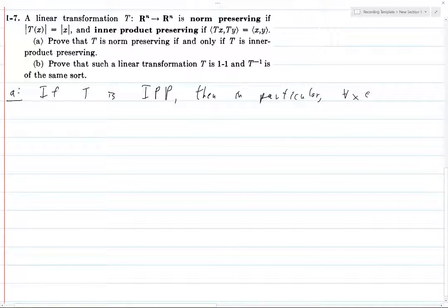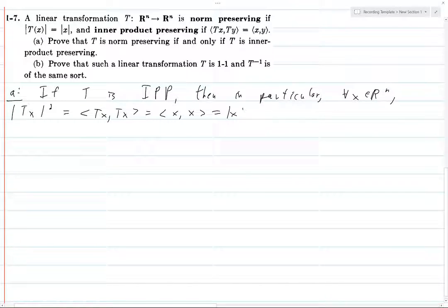for all x in R^n, what do we have? We have |Tx|^2, well we know that this is equal to the inner product of Tx with Tx, which by IPP is equal to this, which is equal to |x|^2. So taking square roots, |Tx| = |x|.